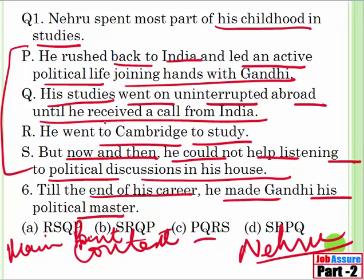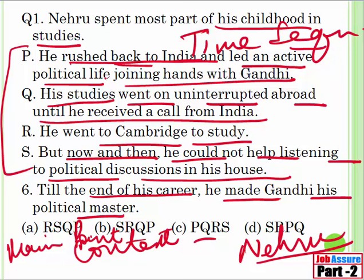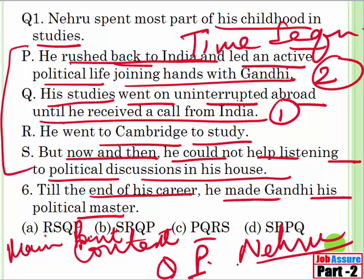'Nehru spent most of his childhood in studies' — here you need to follow the time sequence. In P, it says he rushed back to India and led an active political life. In Q, it says his studies went on uninterrupted abroad until he received a call from India. So first he will receive the call, then he is going to rush back — Q is going to be followed by P. Q followed by P appears in options A and B. Options C and D do not have Q followed by P, so they get eliminated.